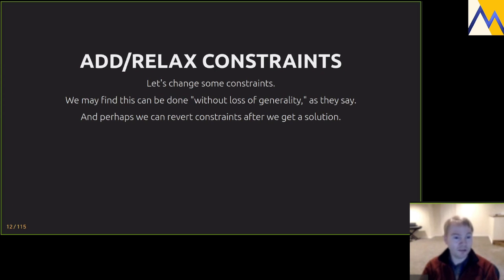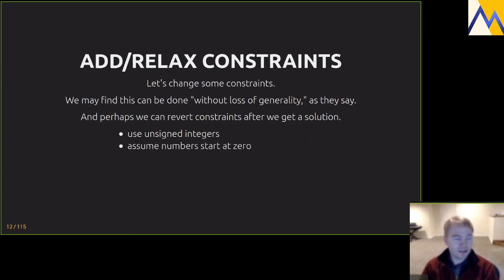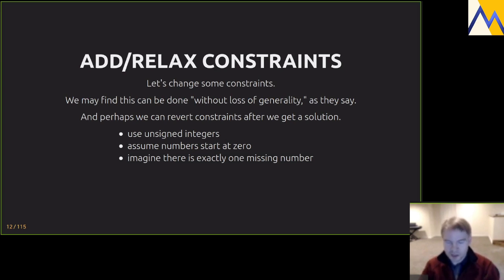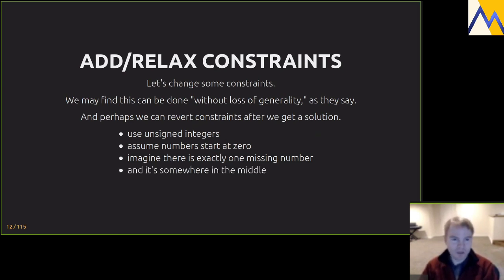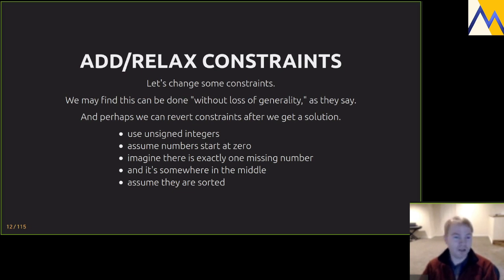So let's relax some constraints: use unsigned integers to make it easier to think about, assume values start at zero, assume there's only one missing number somewhere in the middle — not at zero and not at max int — and assume that they're sorted. This highly constrained problem now has a clear structure.